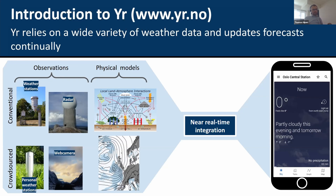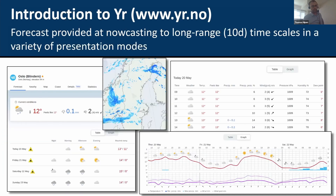All this data we take and integrate in near real time and update our forecasts very frequently as new data arrives. This is where we call it post-processing — we have a lot of machine learning models that use all these data sources. Our goal is to always give the user the most up-to-date and best forecast at any given time.